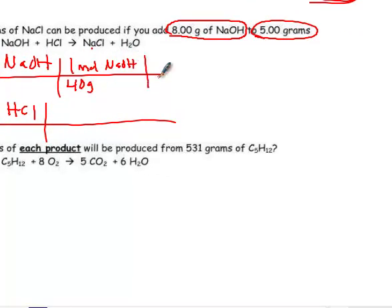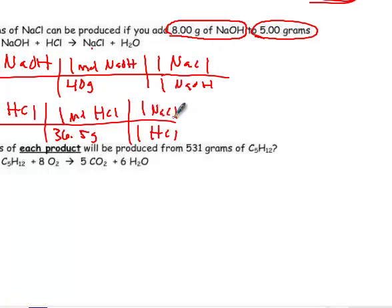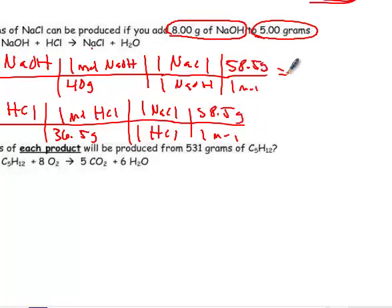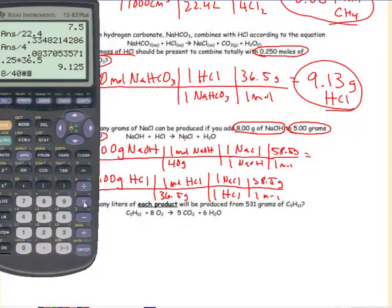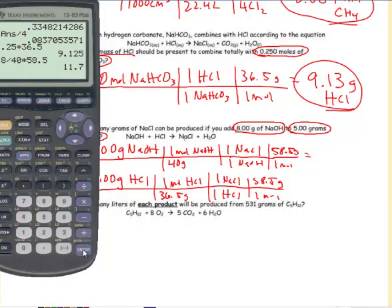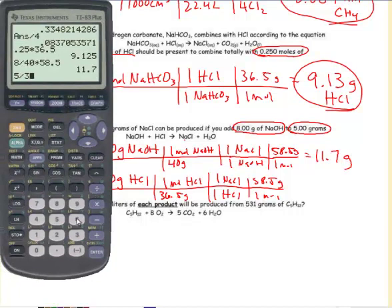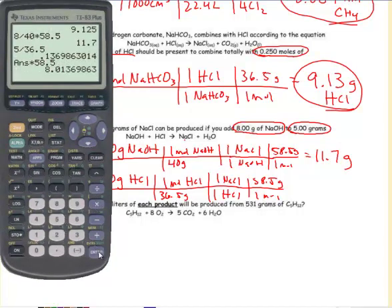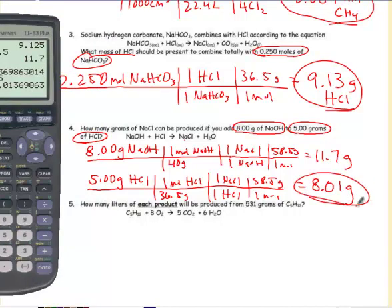All right, so 40 grams in 1 mole of NaOH, 36.5 grams in 1 mole of HCl. Ratio is 1 to 1 to 1 to 1, so 1 NaOH to 1 NaCl. Remember, I said about the last step, you should have it as the same since you're trying to compare the two. So, in the first one, we have 8 divided by 40 times 58.5, and I get 11.7 grams. The second one is 5 divided by 36.5 times 58.5, and I get 8.01 grams. So the correct answer will be 8.01 grams. The limiting reactant then is HCl.